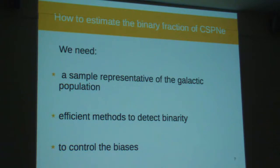So to get this number, we need three things: a sample that's representative of the population, methods to detect binaries and to understand the biases in the methods and sample, to understand what population is represented.